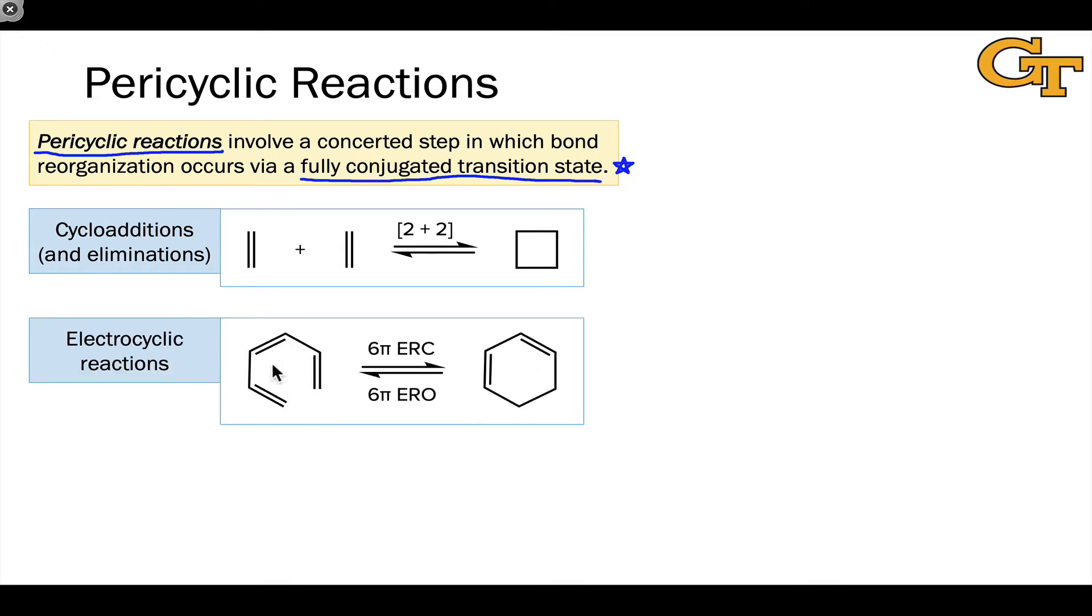Electrocyclic reactions involve cyclic electron flow within a contiguous pi system of typically an even number of atoms, and these are named using either ring-closing (RC) or ring-opening terminology. So this is a forward electrocyclic ring-closing (ERC), and in reverse, it's an ERO, electrocyclic ring-opening. Six pi here refers to the number of pi electrons involved. Six pi electrons, six atoms, it's a six pi ERC or six pi ERO process.